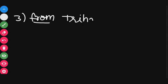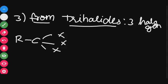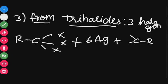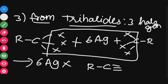The fourth method is from trihalides. Trihalides have three halogen atoms — R–C with three X groups. You add 6 Ag (silver), which reacts with both trihalide units (R–CX₃ and R–CX₃), removing 6 AgX in total. You get RC triple bond CR — alkyne formation.